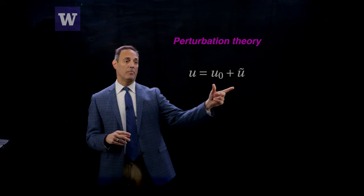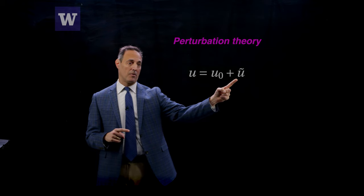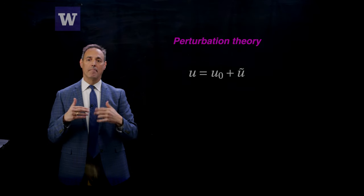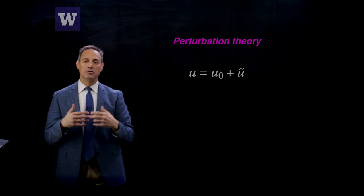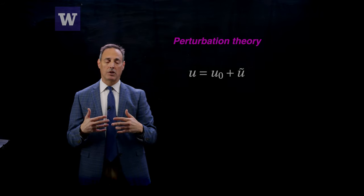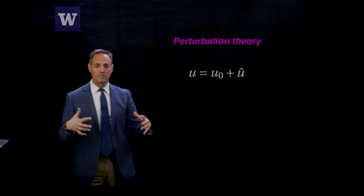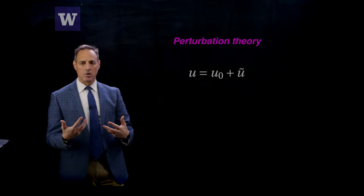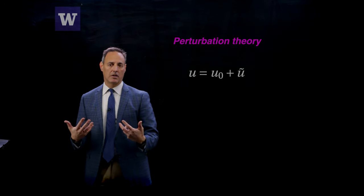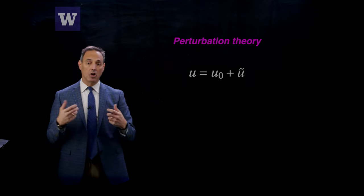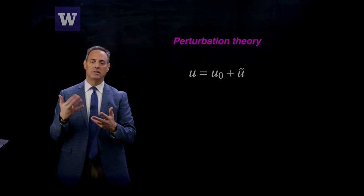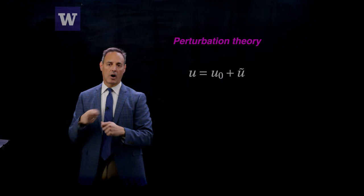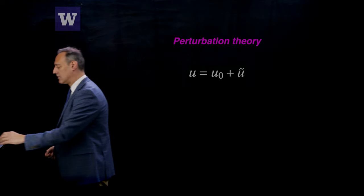We're going to perturb around some solution U-naught with perturbation U-tilde. What I want to understand is how do modes couple in time due to different mechanisms? How is it that energy gets exchanged between modes? It happens in a couple of characteristic ways. One is through nonlinearity, which can cause modes to couple and shift energy among them. The other is forcing of the system and driving the coupling.